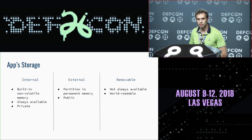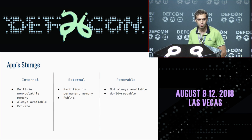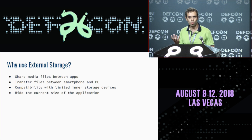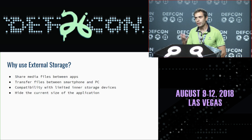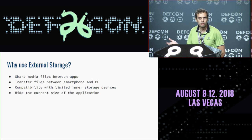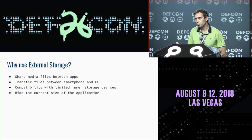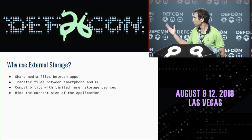Removable storage is actually an SD card which can be extracted from a device and is world-accessible as well. From the app perspective, external and removable storage are the same thing, and the Android framework provides one API for both. Android needs external storage because users want to share media data like photos, video, and audio between apps and transfer this data to a PC. Plus, all devices are limited in internal storage. But there is no reason to save any sensitive app information in external storage.